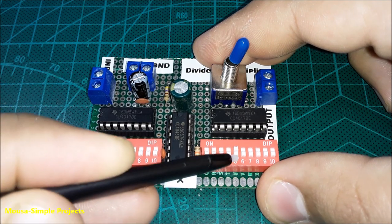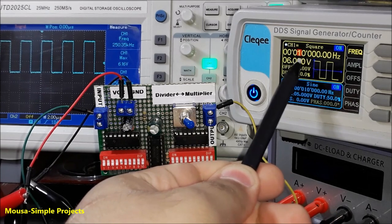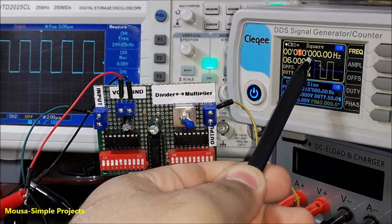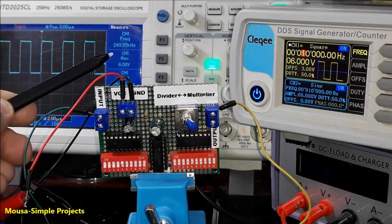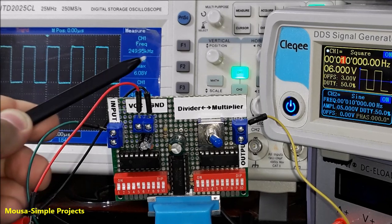I hooked up a square wave with a frequency of 10 kHz to the input. I select the frequency multiplier and as you can see, the output frequency is 25 times more than the input.